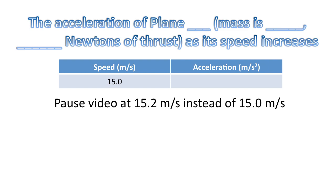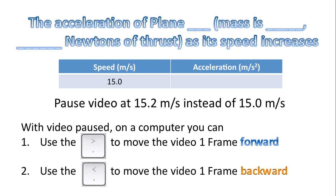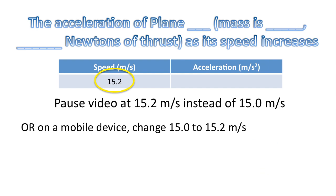If you were trying to record the acceleration for a different speed and you paused the video at 15.2 meters per second instead of 15.0, here's what you do. With the video paused on a computer, you can use the period key to move the video one frame forward, or the comma key to move one frame backward, to get the precise acceleration at 15.0 meters per second. If you're on a mobile device without those keys, you can just change 15.0 to 15.2 meters per second in the table and record the acceleration for that.